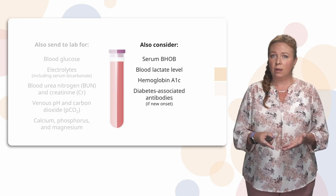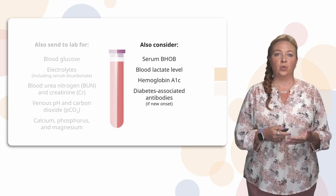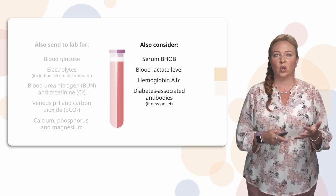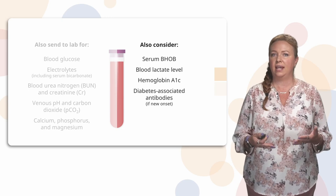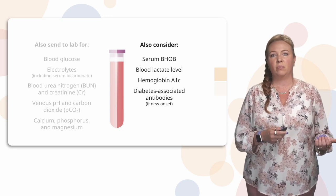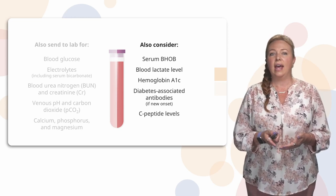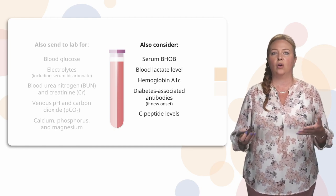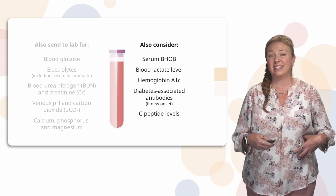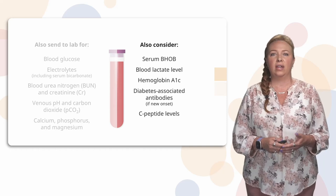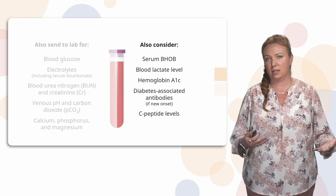If this is the first time the patient is presenting, we'll send diabetes-associated antibodies — including insulin autoantibodies, islet cell antibodies, and zinc transporter antibodies. You don't need to remember those, but when we have an initial diagnosis — and pediatric patients often present in DKA for their initial diagnosis — we send these antibodies to determine whether we have type 1 or type 2 diabetes. We'll also send C-peptide levels, which helps determine if there's any endogenous insulin production. If the pancreas is producing some of its own insulin, it's probably type 2; if there's no insulin being produced, it's more likely type 1.